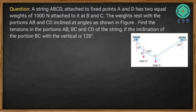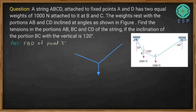First, we'll take point C and try to find the tension in portions CD and BC, then we'll take point B to find the tension in portion AB. So I'll draw the free body diagram of point C. At point C, the weight W acting is 1000 Newton.